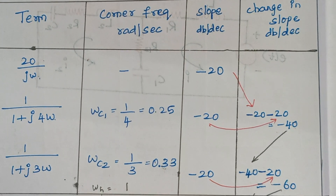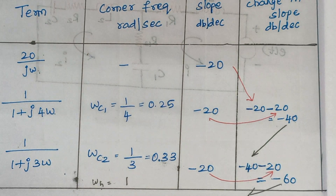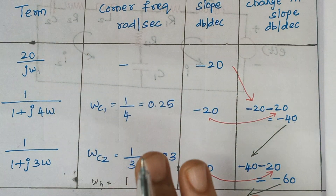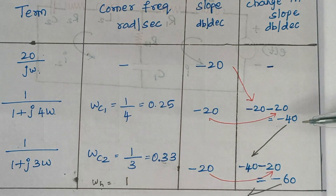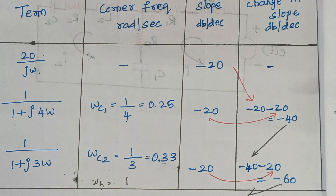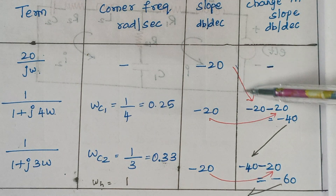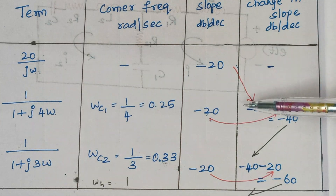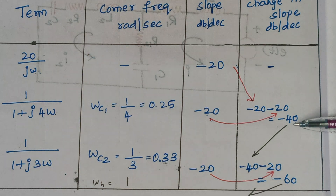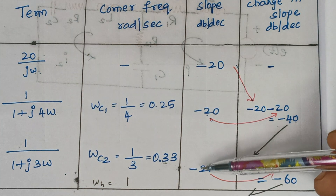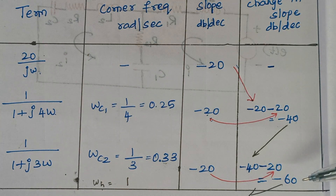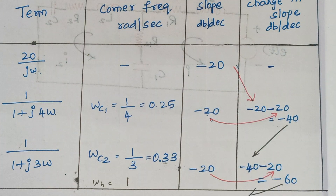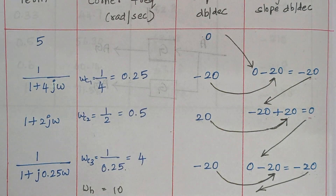The next thing is to calculate the change of slope. Always keep in mind that a constant and an individual omega term won't contribute any change in slope. Change of slope always happens whenever there is a corner frequency — only at the corner frequency will we have a change of slope. This minus 20 is pulled downward and moved to the right, contributing a slope of minus 60.